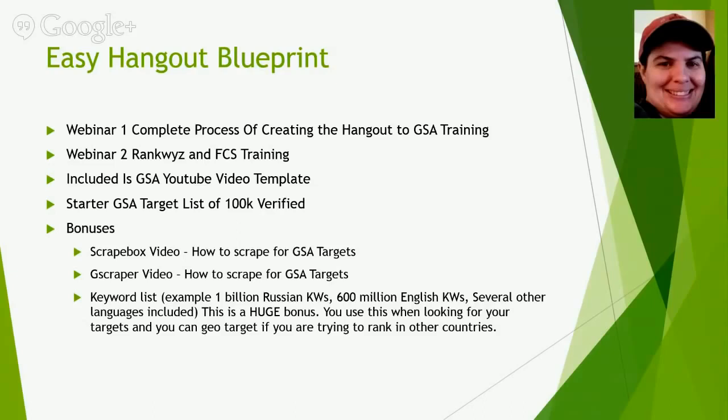And webinar two — RankWiz and FCS. RankWiz is going to be the easiest one for them to use because, as you have mentioned, they can buy pre-made accounts. So we can take them through the process of getting the accounts, how to get them imported, and how to start using that tool straight off the bat. With that, they can really get up and running within minutes. Is that correct?